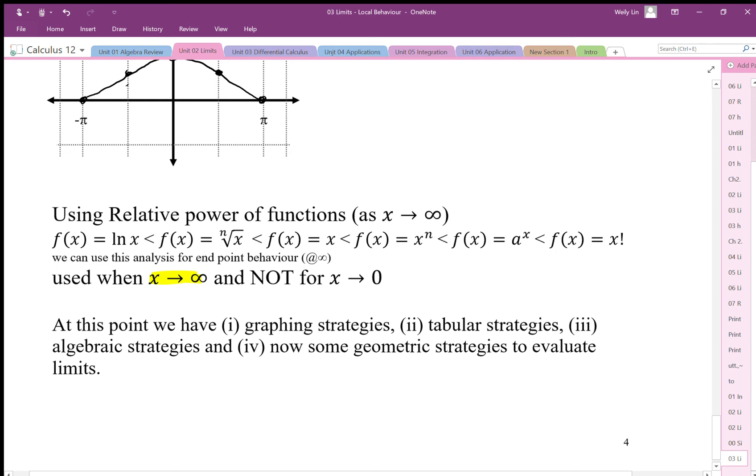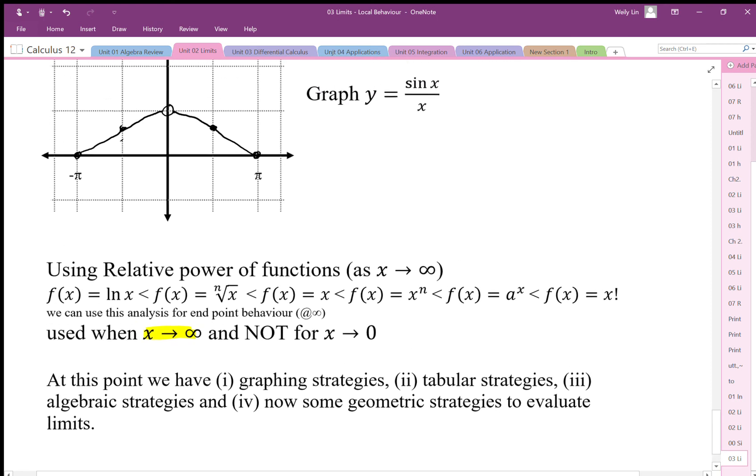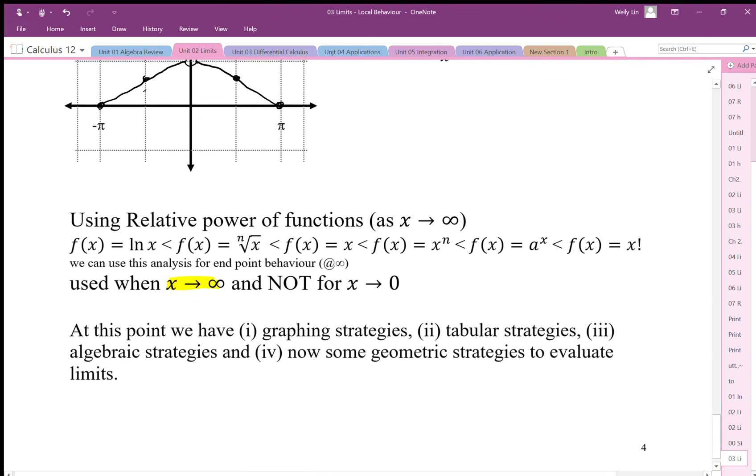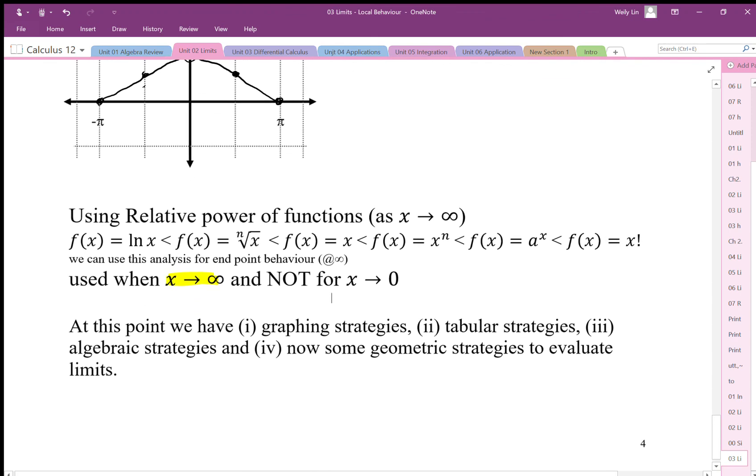We have some algebraic strategies now—simplification—and we have some geometric strategies as well. With these algebraic strategies, we have to make sure we have these graphs in mind because we have to worry about which side of zero we're dividing by when we divide by zero. When we look at these limits, we also have to worry about one-sided limits versus two-sided limits. There are all these factors now that we are having to consider.